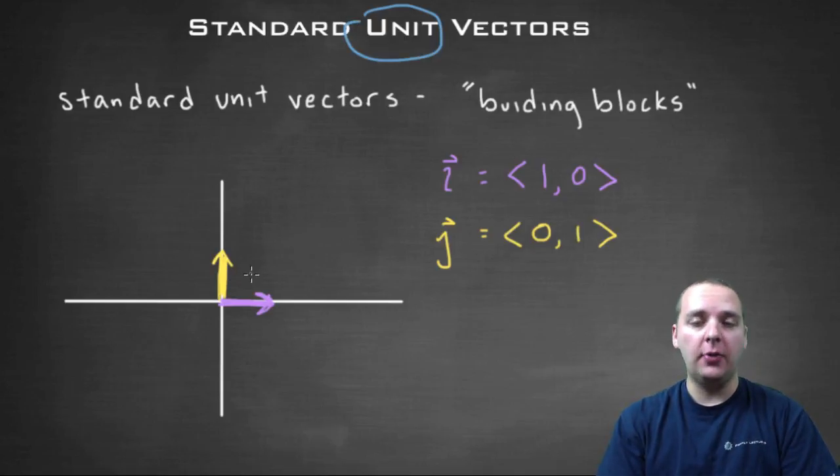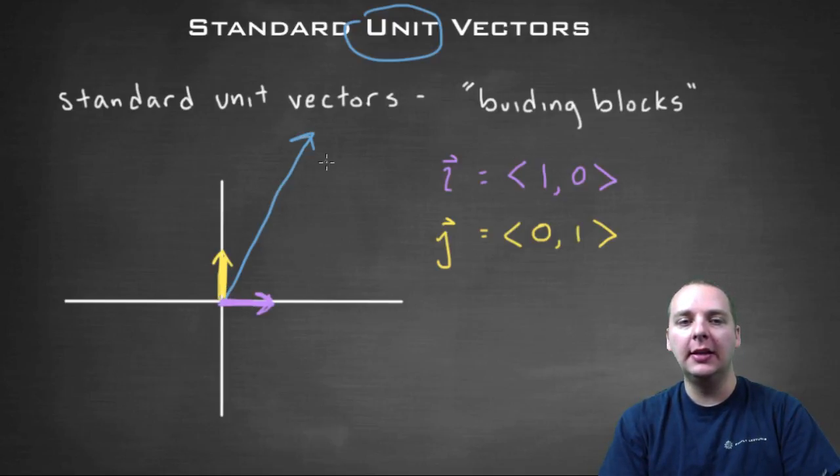Somehow, and we'll show you how in just a second, any combination of these can be used to build any vector. So even if you had a vector like this, that was the vector <3,11>, or something like that.